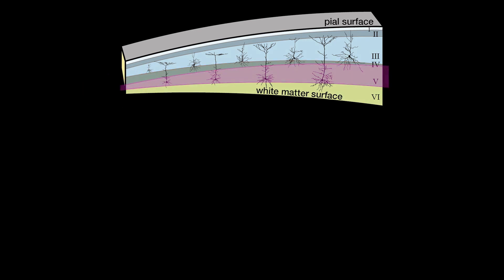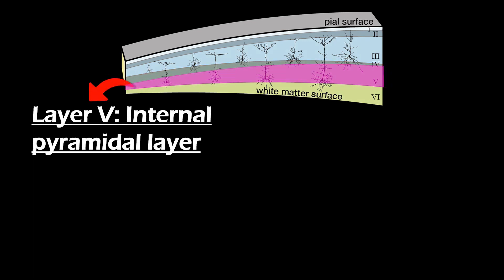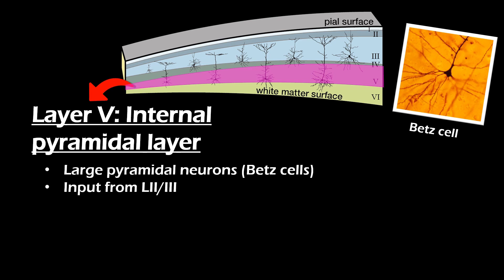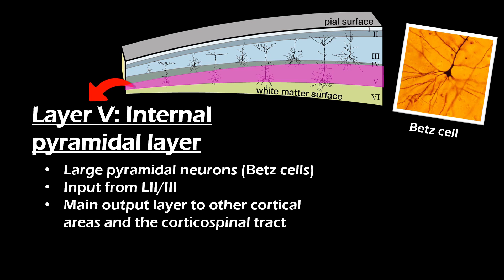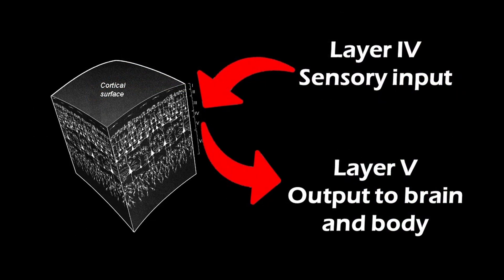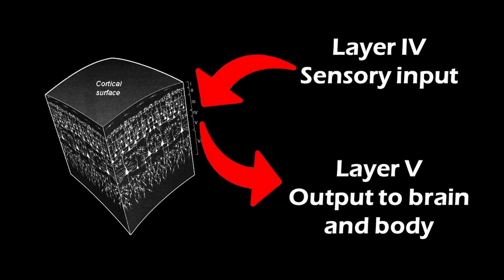The internal pyramidal layer is the fifth layer of the cortex. It is composed of large pyramidal neurons, so-called Betz cells. Layer 5 Betz cells receive input from layer 2 and 3 and have projecting axons to other parts of the brain, including the thalamus, internal capsule, the spinal cord, and other cortical areas. Given that layer 5 is the main output layer for corticospinal output, it is no surprise that layer 5 makes up a large proportion in the primary motor cortex. In short, layer 5 can be seen as the main output layer, whereas layer 4 is the main input layer.